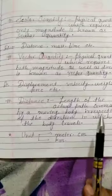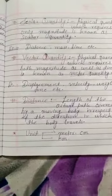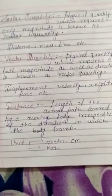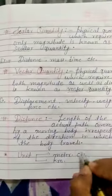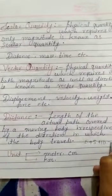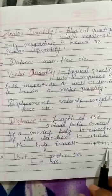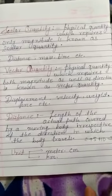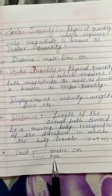Suppose initially I moved 5 km towards the north, then 5 km towards east, and then 10 km towards south. So the total distance is 5 + 5 + 10 = 20 km. You just add the total distance covered from the initial point — that is distance. The unit of distance is meter, centimeter, and kilometer.